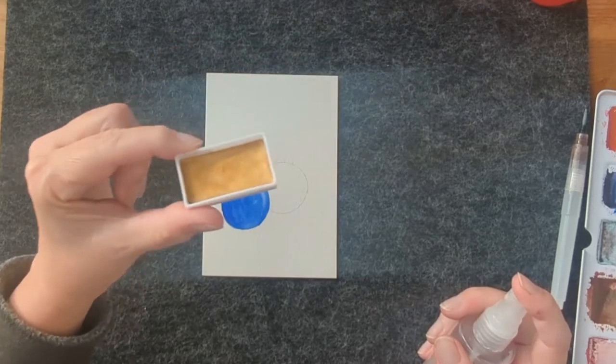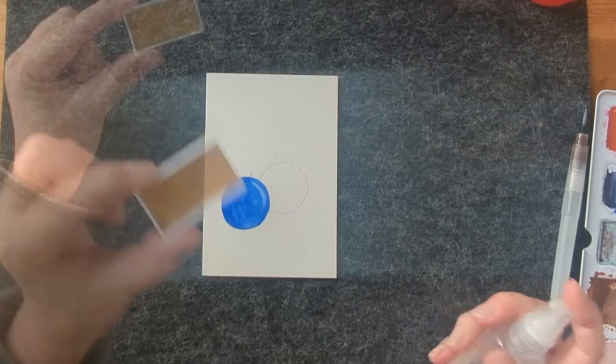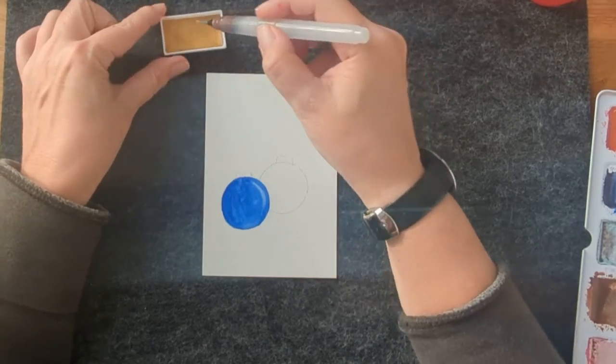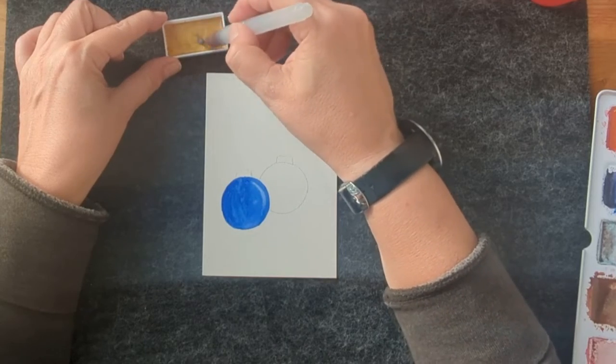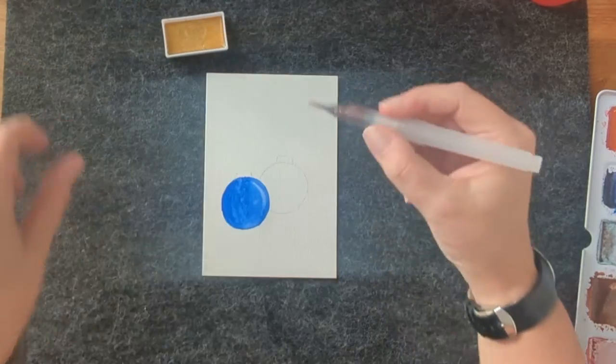The other circle I paint in gold. I use these little gold boxes. I bought it at a cheap craft store and it's fine. I like it.